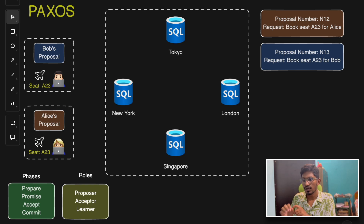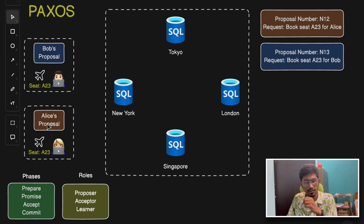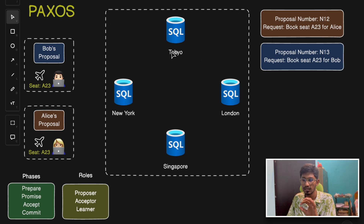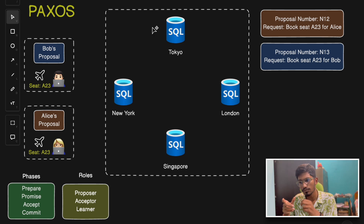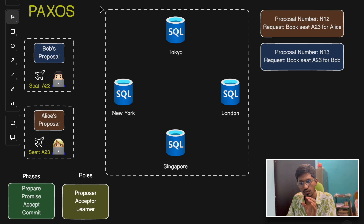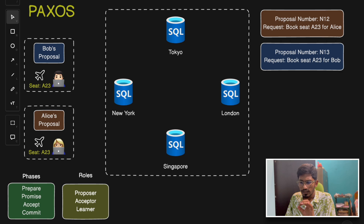Let's consider a scenario where two people are trying to book the same seat — seat A23 — in the same flight. LS is a user from New York trying to book seat A23, and Bob also wants to book the same seat at nearly the same time. The system must ensure that only one of them gets the seat. If different database nodes process the requests independently, we could have a double booking — so we need a consensus algorithm like Paxos.